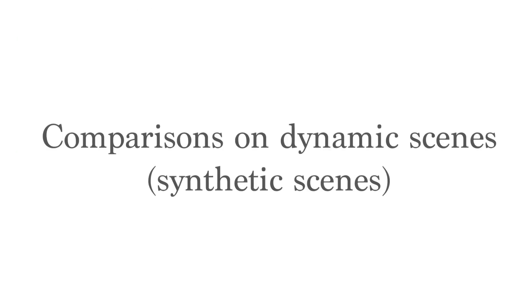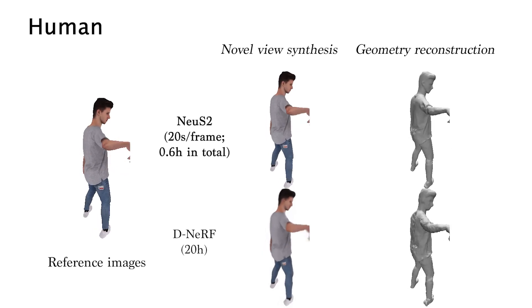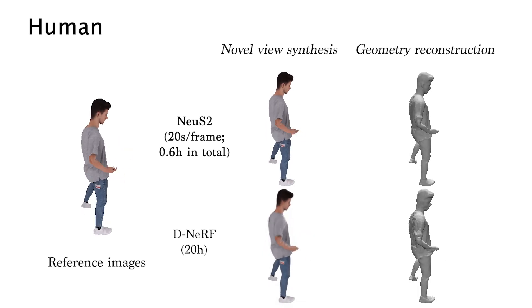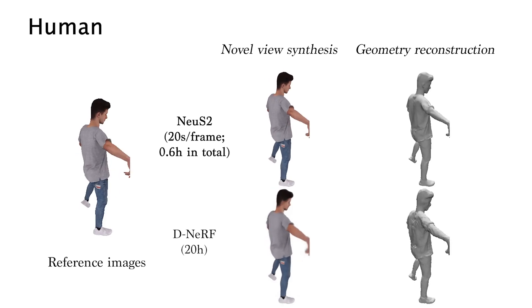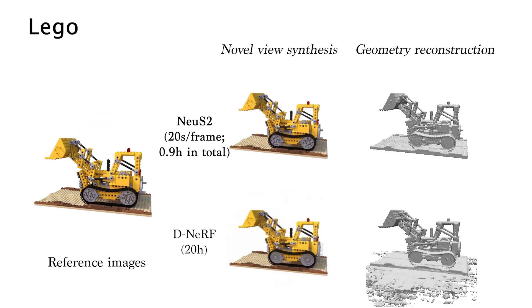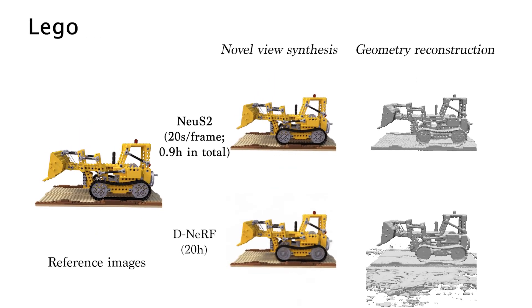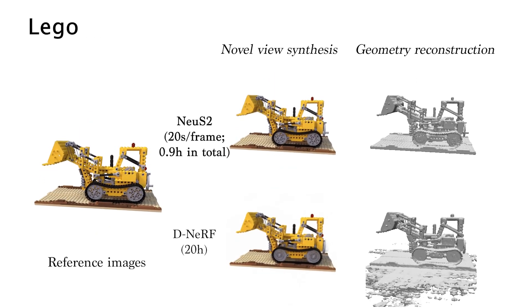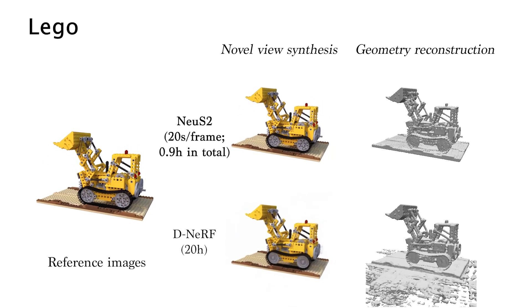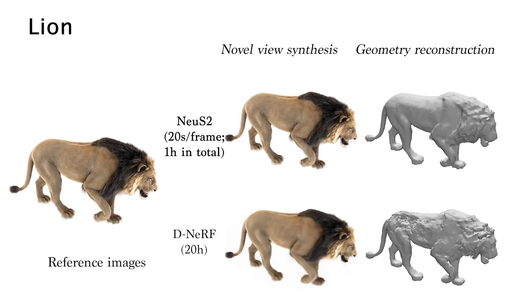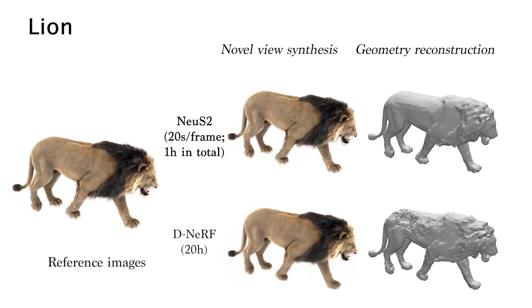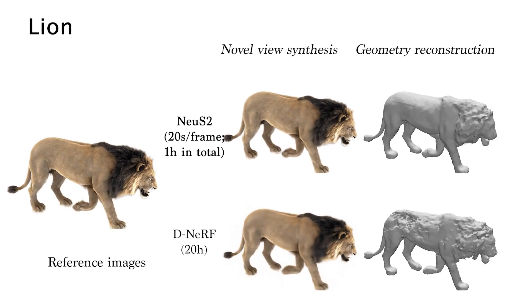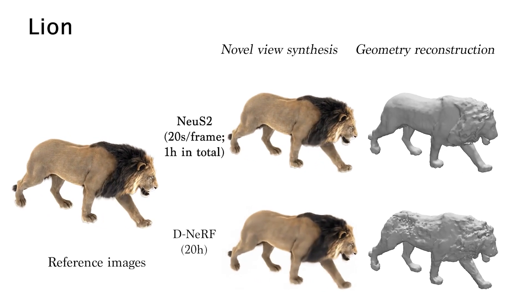For the dynamic scene reconstruction, we first compare NuS2 with D-NERF on synthetic scenes. NuS2 shows significantly improved novel-view synthesis and geometry reconstruction results compared to D-NERF. Notably, NuS2 only uses 40 seconds to train the first frame and 20 seconds for each subsequent frame; in contrast, D-NERF needs about 20 hours to train such a sequence.